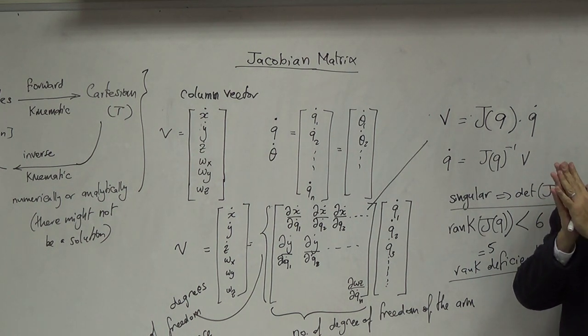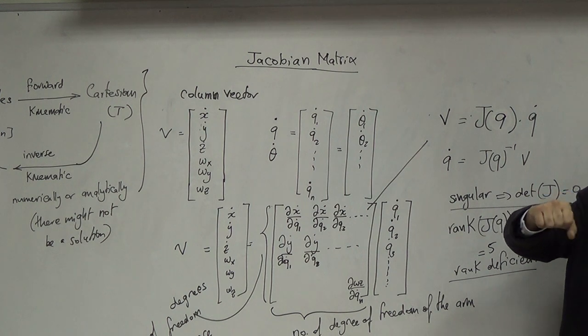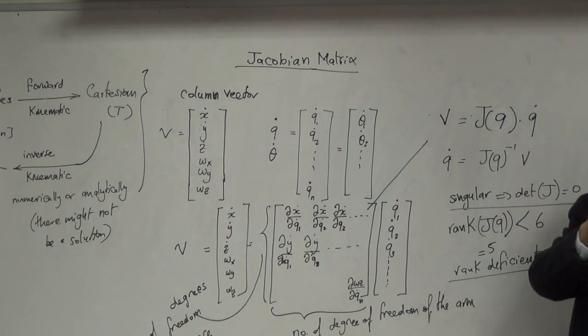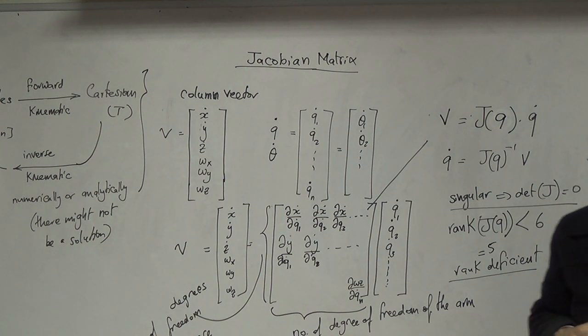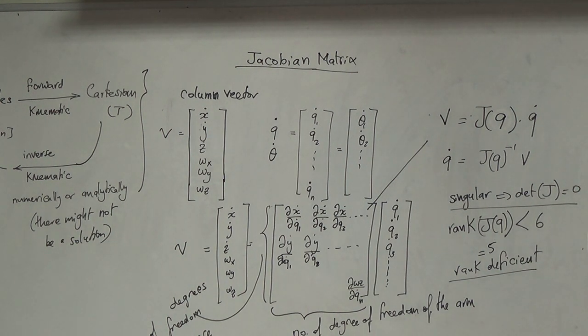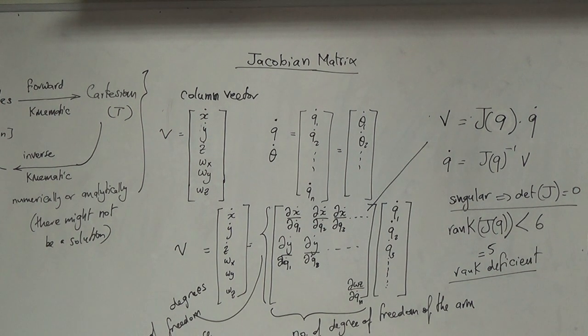فأنا كنت محافظ على 6 degrees of freedom. أي لحظة بصير فيها theta 5 = 0 بنزل الـ rank تبع الـ Jacobian من 6 لـ 5. وما فيش أي طريقة ثانية أعمل alignment للـ axes تبع الـ Puma 560. ما بقدر أعمل alignment زي بحكي لكم المرة الماضية Z1 لـ Z4.